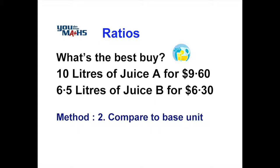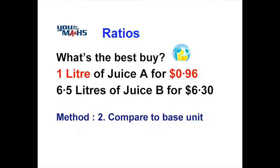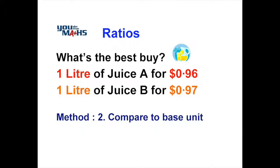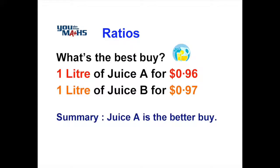For juice A, we divide nine dollars sixty by ten, which gives us zero dollars ninety-six, or ninety-six cents — that's the cost for one litre. For juice B, we divide six dollars thirty by six point five, and using a calculator that gives us zero dollars ninety-seven, or ninety-seven cents. We can see now that the best buy is juice A — it's one cent per litre cheaper than juice B.